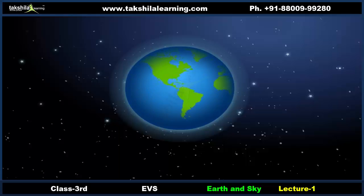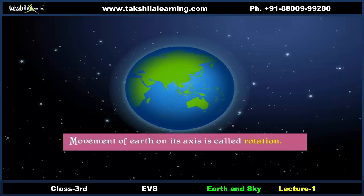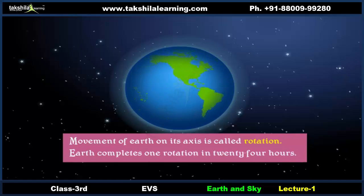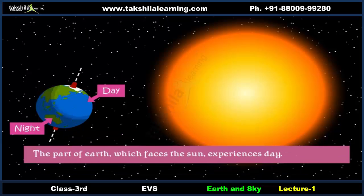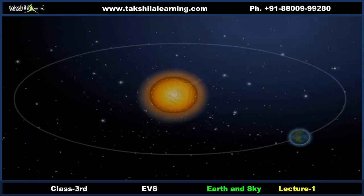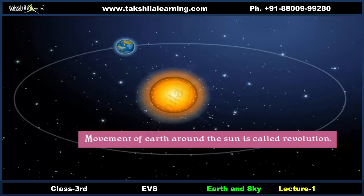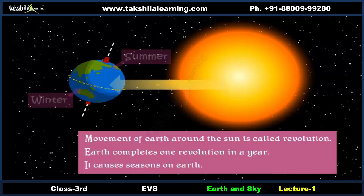Earth shows two types of movement. Movement of Earth on its axis is called rotation. Earth completes one rotation in 24 hours, and Earth's rotation causes day and night. The part of Earth which faces the Sun experiences day, while the part facing away from the Sun experiences night. Movement of Earth around the Sun is called revolution, and Earth completes one revolution in a year, which causes seasons on Earth.